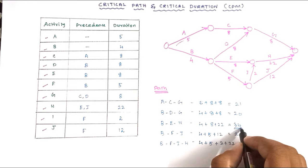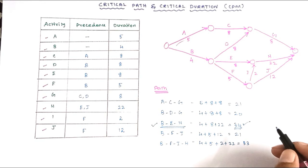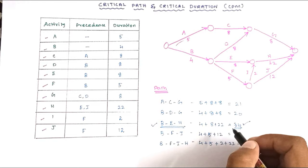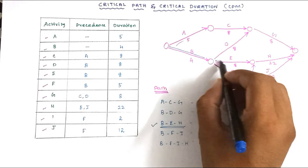The longest duration is 34, for path B–E–H: 4 + 8 + 22 = 34. This is the critical path and 34 is the critical duration. We highlight B, E, and H as the critical path. This is the critical path method for solving problems related to critical path and critical duration. We will see the next problem — thank you.